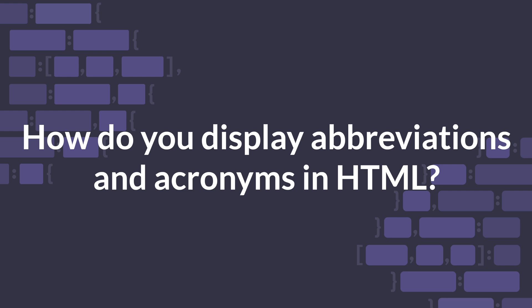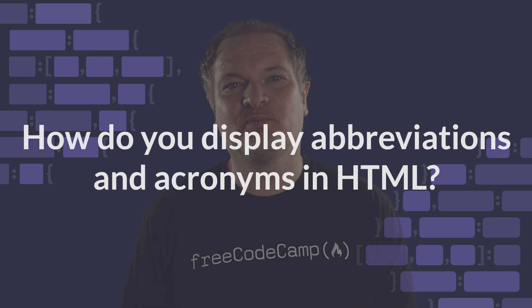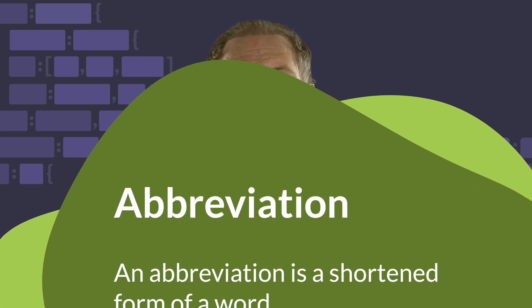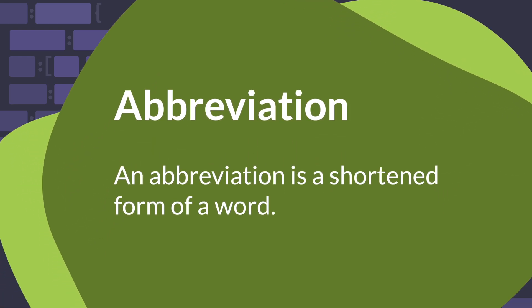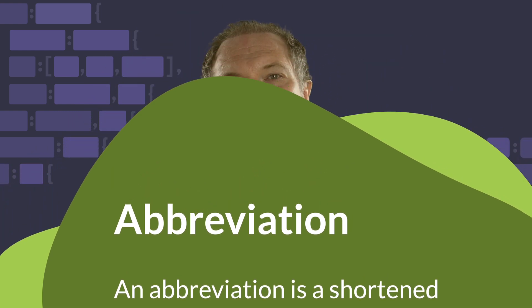How do you display abbreviations and acronyms in HTML? An abbreviation is a shortened form of a word. For example, 'Dr.' followed by a period is an abbreviation for the word 'doctor'.